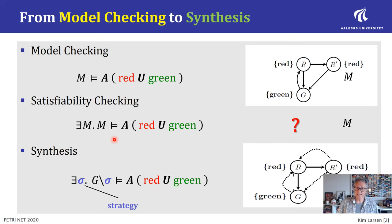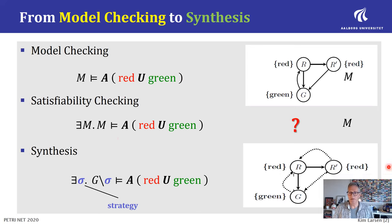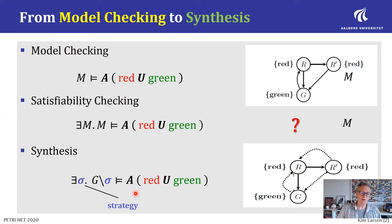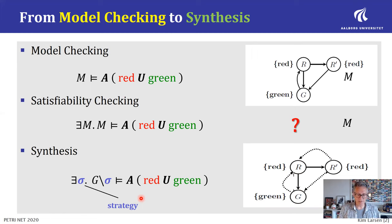Finally, the synthesis problem: you have a game version of your Kripke structure. We have controllable transitions — these are the full transitions — and uncontrollable transitions. The question is whether there is a strategy for the controller, in terms of which controllable transitions should be chosen at which point, so that under that strategy the resulting behavior will satisfy the property of interest.